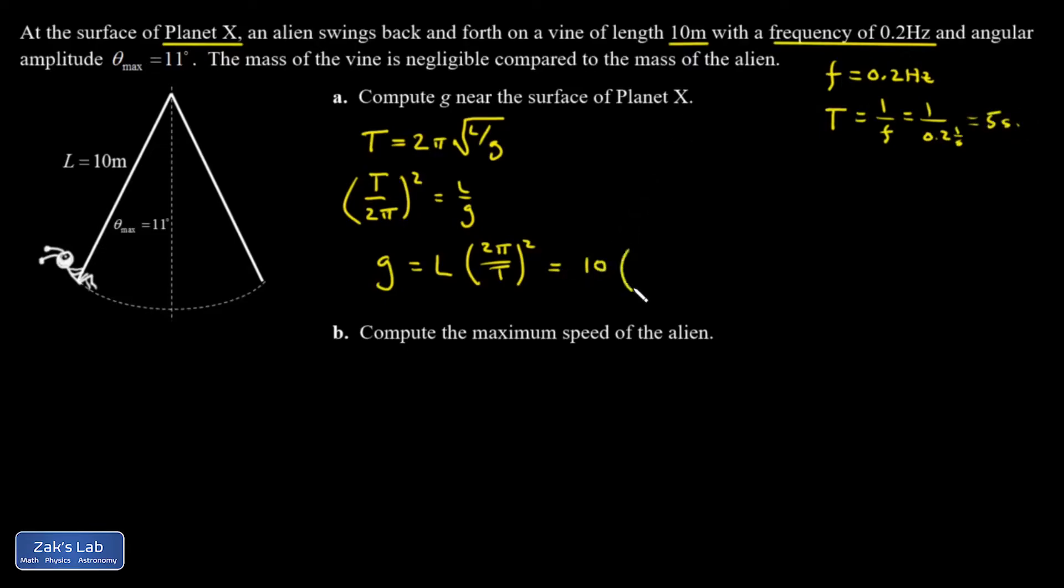I have a 10 meter vine. 2π over 5 quantity squared. And I get that G is 15.8 meters per second squared. So G is substantially larger on planet X. Which actually makes it so pendulums will swing faster if I look at my period formula.